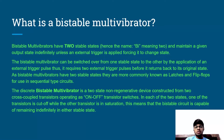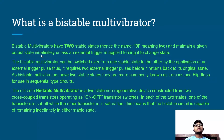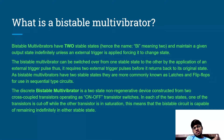As bistable multivibrators have two stable states, they are commonly known as latches and flip-flops, used in sequential type circuits. Sequential circuits are where you have two circuits and you want to perform operations in a sequence — for some time you want the output from the first circuit and then from the second circuit. There you can use the bistable multivibrator as a latch or a flip-flop.